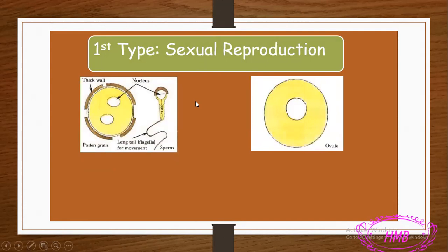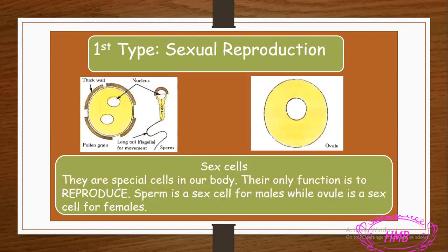As living things, we have many cells in our body and these cells help us to stay alive. We have trillions of cells, each with its own function. But in every living thing we have special cells whose only function — their only job — is to make reproduction, to make new living things. These cells differ according to the sex of the living thing, whether it is male or female.